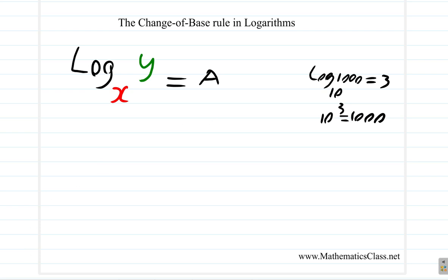The base of the log is x, so the base of the index should also be x. In index form, the number you're raising to the power is the answer. In log form, the number you're logging is y; in index form, it is the answer — so we get x to the A equals y.